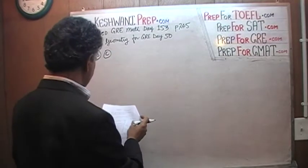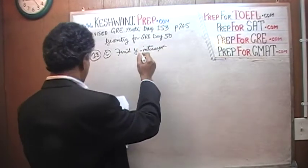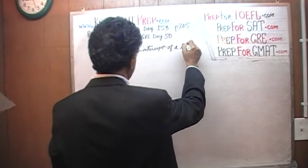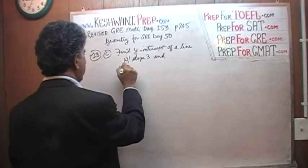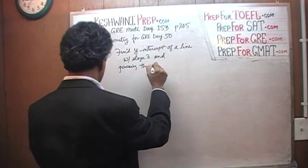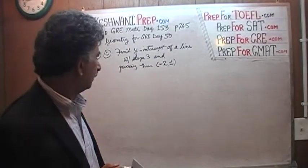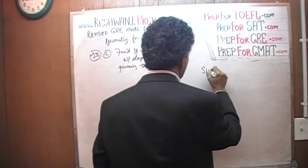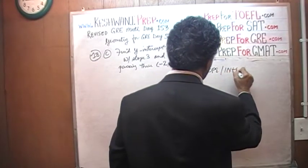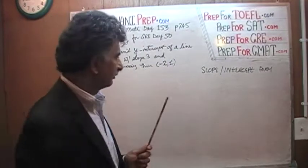In part C, they ask us to find the y-intercept. Find the y-intercept of the line with slope 3 and passing through point negative 2 and 1 — coordinates of negative 2 and 1. What we have to use here is the slope-intercept form of a line.